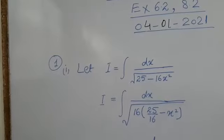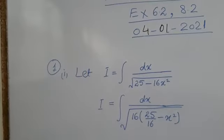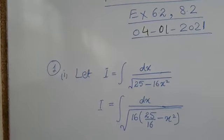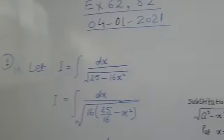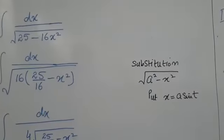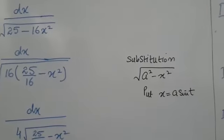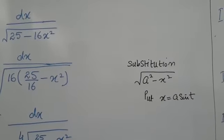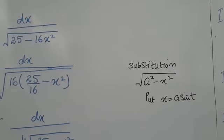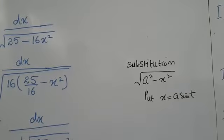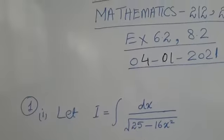We note the x² coefficient is 16. We compare with the standard form √(a² − x²), where we use a·sin(t) substitution. Here the coefficient of x² is 16, so we factor accordingly.